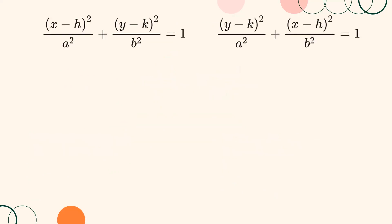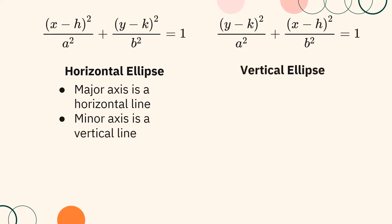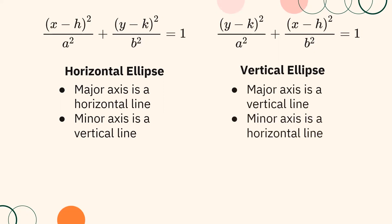Note the following important things about horizontal and vertical ellipses. The standard form of the equation of a horizontal ellipse is (X minus H) squared over A squared plus (Y minus K) squared over B squared equals 1. If the ellipse is horizontal, then its major axis is a horizontal line and its minor axis is a vertical line. On the other hand, the standard form of the equation of a vertical ellipse is (Y minus K) squared over A squared plus (X minus H) squared over B squared equals 1. If the ellipse is vertical, then its major axis is a vertical line and its minor axis is a horizontal line.